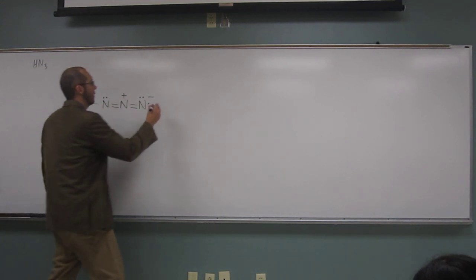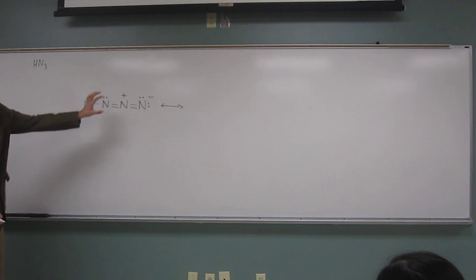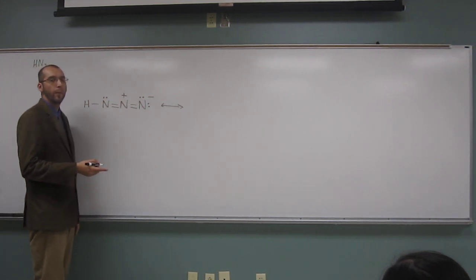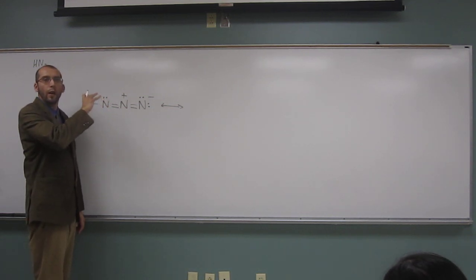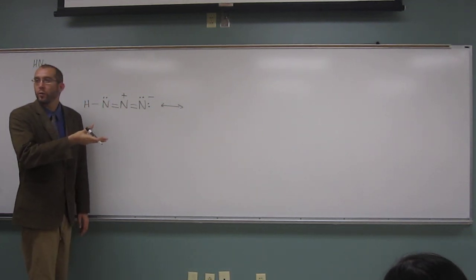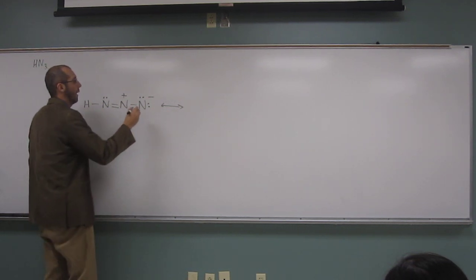So how do we do the other resonant structures? Well, we'll just draw a resonance arrow. And those are the formal charges, of course. And remember, when we're drawing resonant structures, we have to show a lone pair or a bond moving, and another lone pair or bond moving as well.